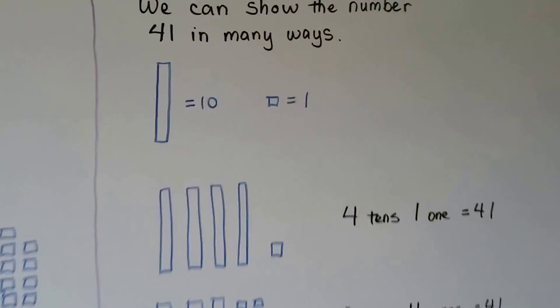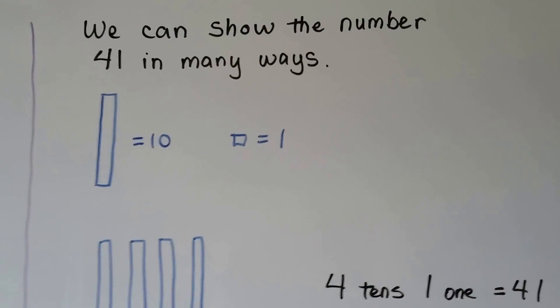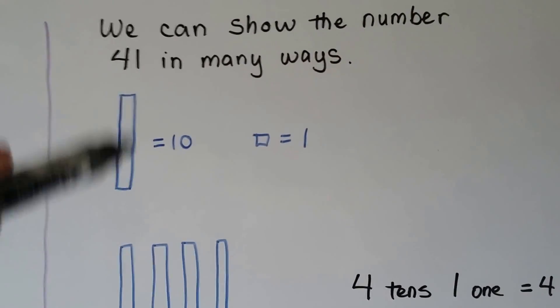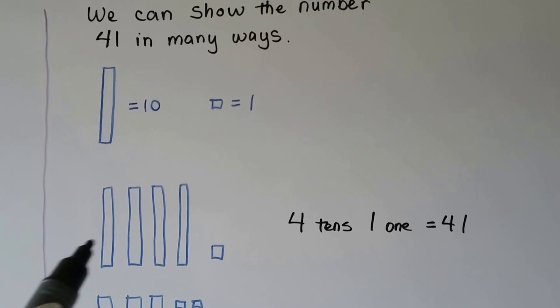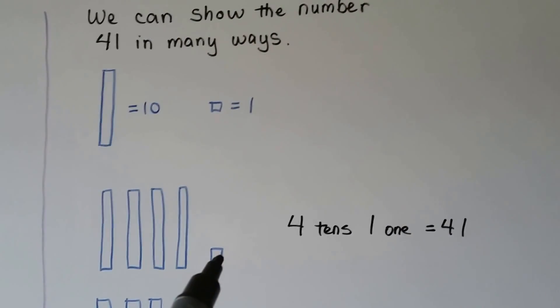We can show the number 41 in many ways. If this is a rod of 10 and that's a one, we can make four tens and one one. That makes 41.